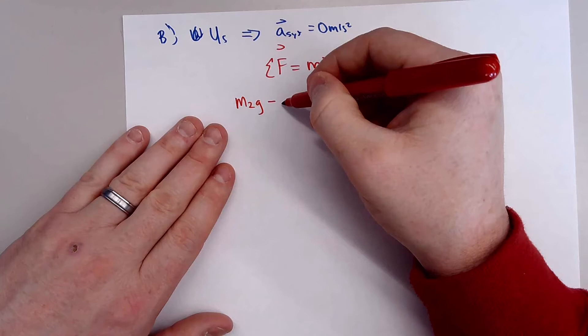So what's interesting is the acceleration of the M1 block will be equal to the acceleration of the M2 block. Okay. Because they are connected. They are a system. Okay. If one of them moves, the other one has to move.